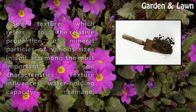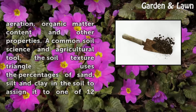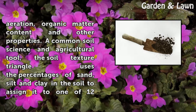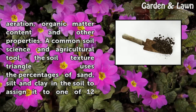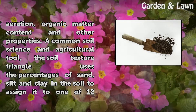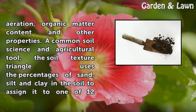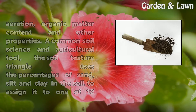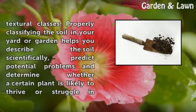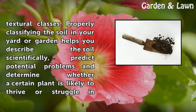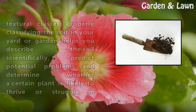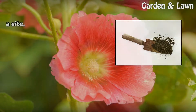Texture influences water holding capacity, drainage, aeration, organic matter content, and other properties. A common soil science and agricultural tool, the soil texture triangle uses the percentages of sand, silt, and clay in the soil to assign it to one of 12 textural classes. Properly classifying the soil in your yard or garden helps you describe the soil scientifically, predict potential problems, and determine whether a certain plant is likely to thrive or struggle in a site.